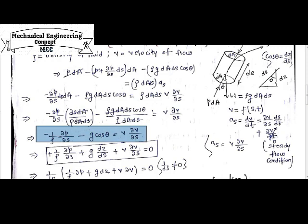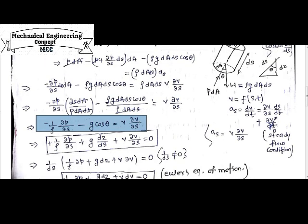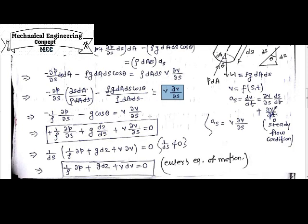Because from here dA, dS will be cancelled out, only rho will be the remainder from denominator, and here also dA, dS will be cancelled out. So one by rho delP by delS will be the remainder, and G cos theta and V delV by delS will be the remainder.